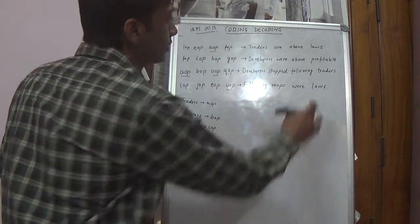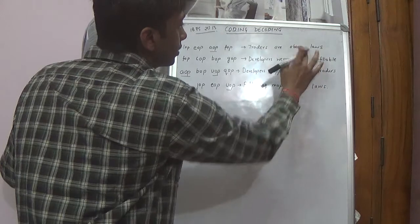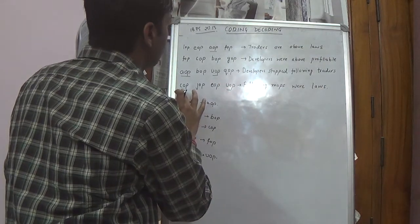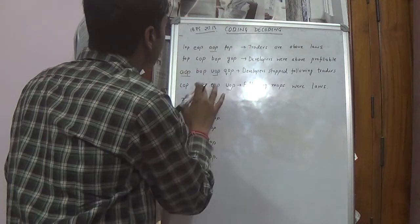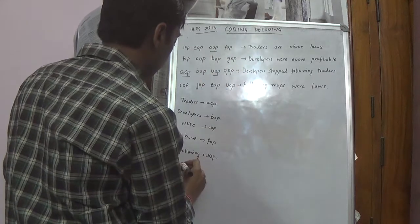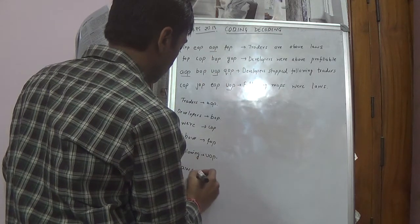Now next could be LAWS. Laws in these two sentences. So if we check these two. COP is not there. JOP is not there. EOP is not there. So EOP. Laws is EOP.